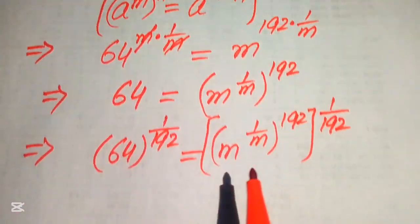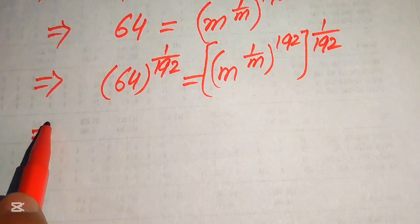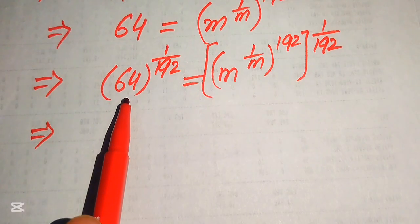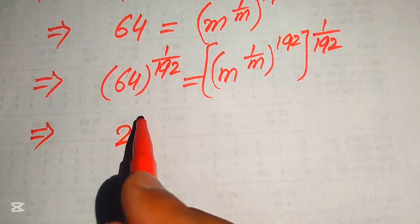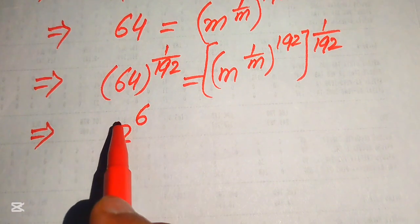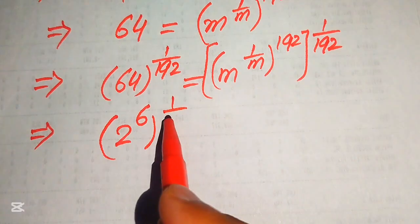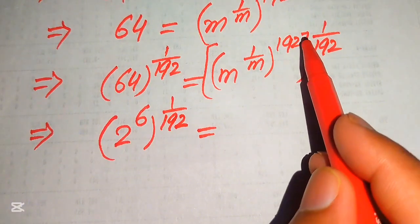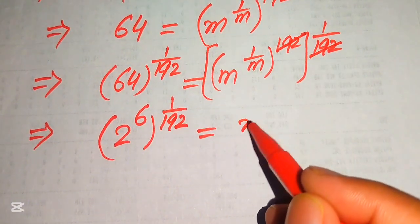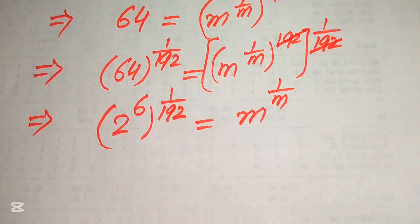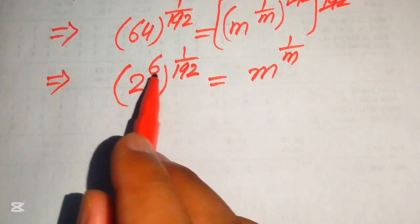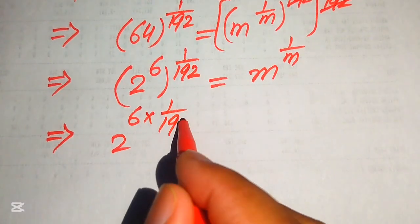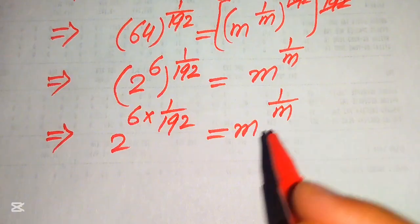We again apply the exponent law and multiply the exponents. On the right hand side, the 192 and 1 over 192 cancel out, leaving m to the power of 1 over m only. On the left hand side, we write 64 as 2 to the power of 6, and multiply the exponents: 2 to the power of 6 multiplied by 1 over 192, equals m to the power of 1 over m.